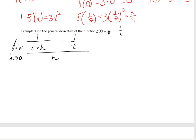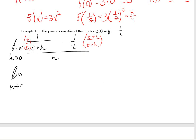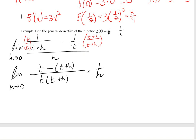To subtract these two fractions, we need a common denominator. We multiply the right-hand side by the denominator of the left and vice versa. After doing that, we get the limit as h approaches 0 of t minus t plus h, all over t times t plus h, multiplied by 1 over h. Distributing the negative on the top, we get nice cancellation: the t's cancel, and the negative h and h across the division cancel as well.